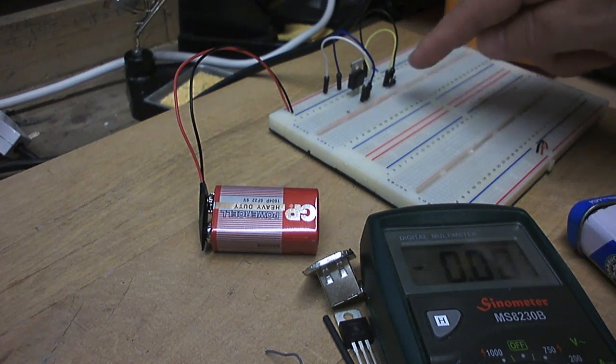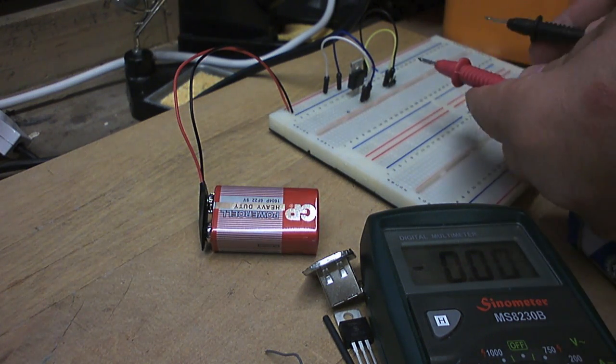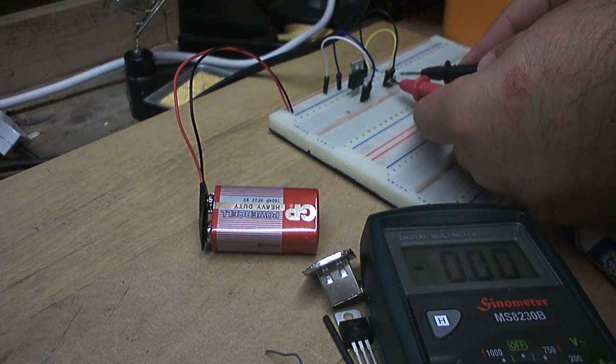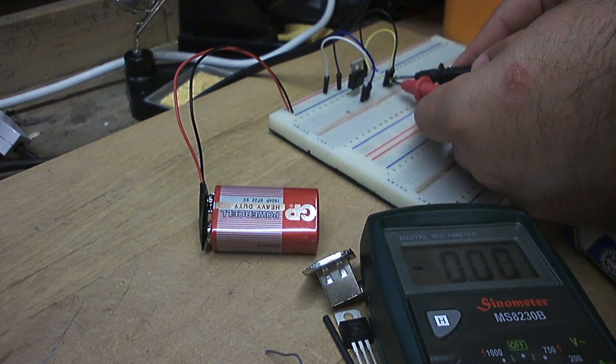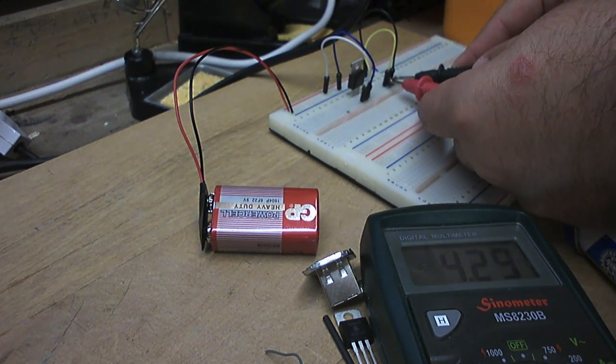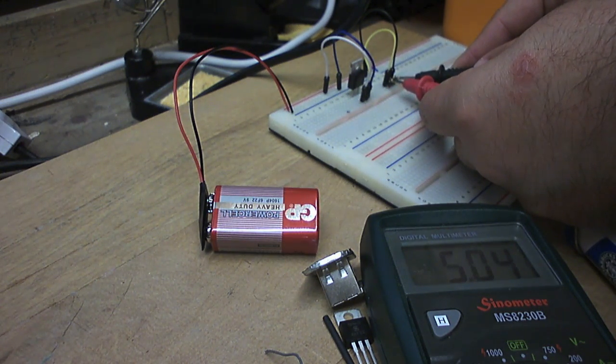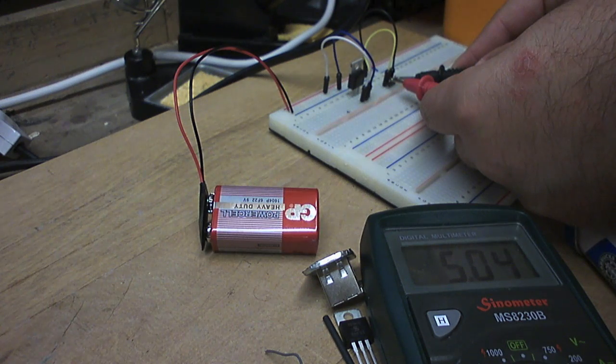So pin 3 is on the left here which I'll use for red. And then on the far right is the output, as you can see there, just got 5.04 volts.